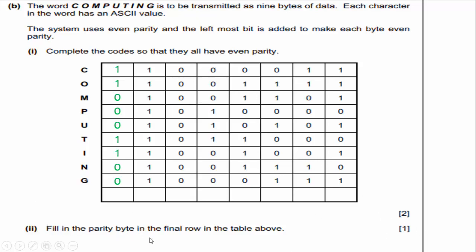For the parity byte (the final row), instead of going horizontal you count vertically. Column 1: 1,2,3,4 ones — add 0 (even). Column 2: nine ones — add 1 (even). Column 3: all zeros — add 0. Column 4: 1,2,3 ones — add 1. Column 5: 1,2,3,4,5 ones — add 1. Column 6: 1,2,3,4,5 ones — add 1. Column 7: 1,2,3,4 ones — add 0. Last column: 1,2,3,4,5,6 ones — add 0. That is how you complete the parity block check.